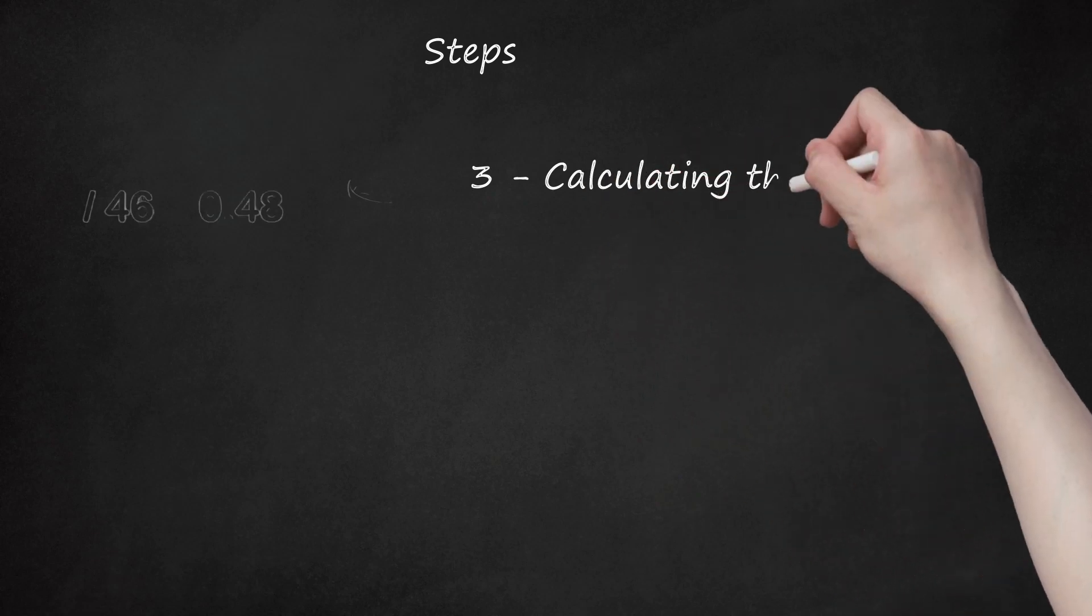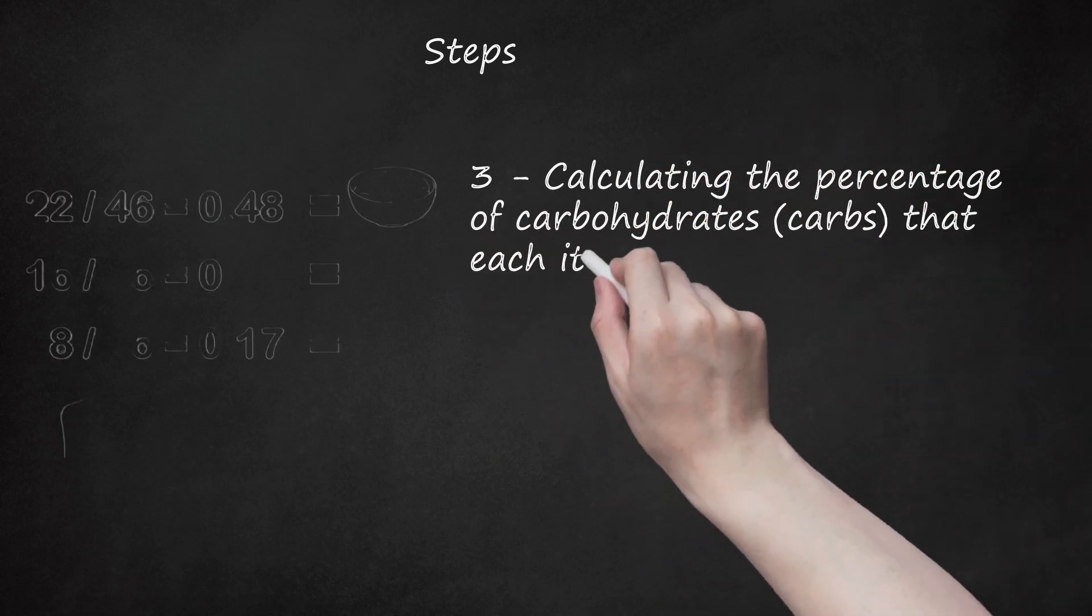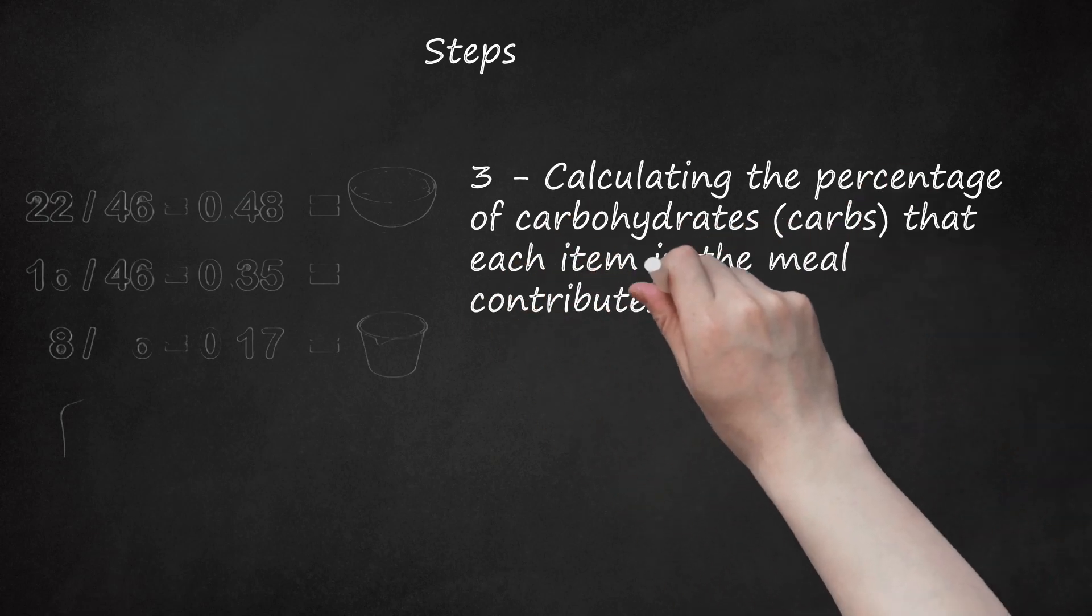Step 3: Calculating the percentage of carbohydrates that each item in the meal contributes. Divide the number of carbs in each item by the total number of carbs in the meal. Example: To figure out the percentage of carbs the oatmeal contributes, take 22 (the oatmeal) and divide it by 46 (total carbs in the meal) to get 0.48. Round it to keep the math simple.